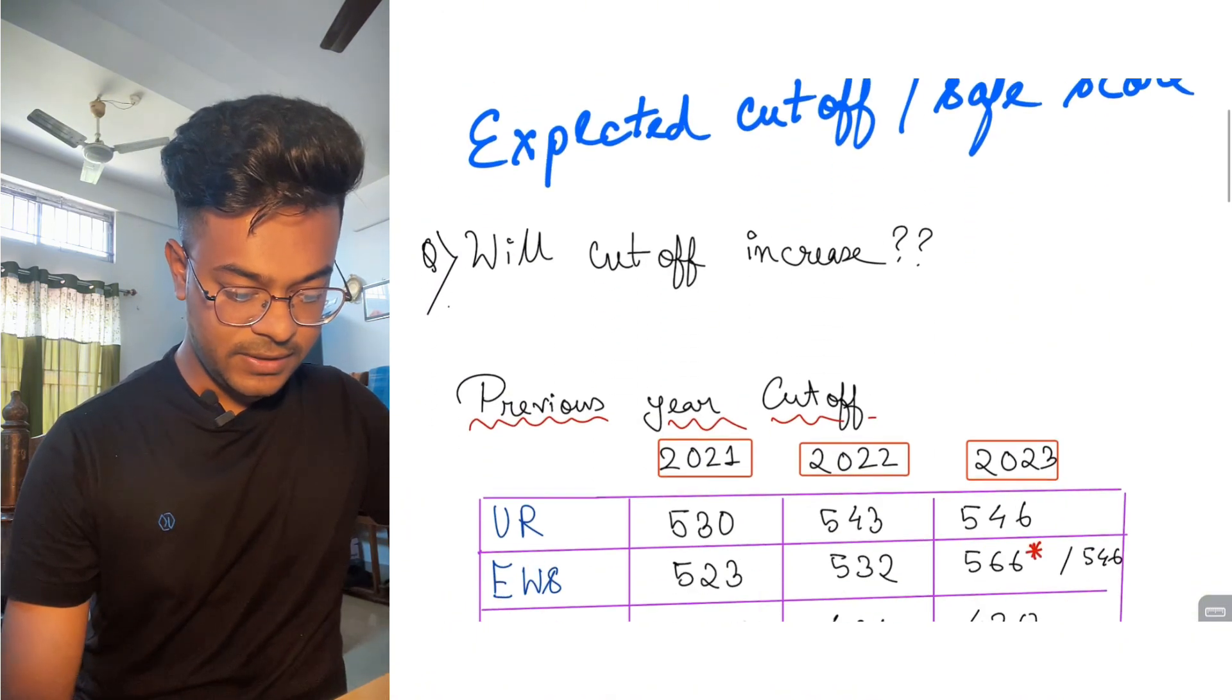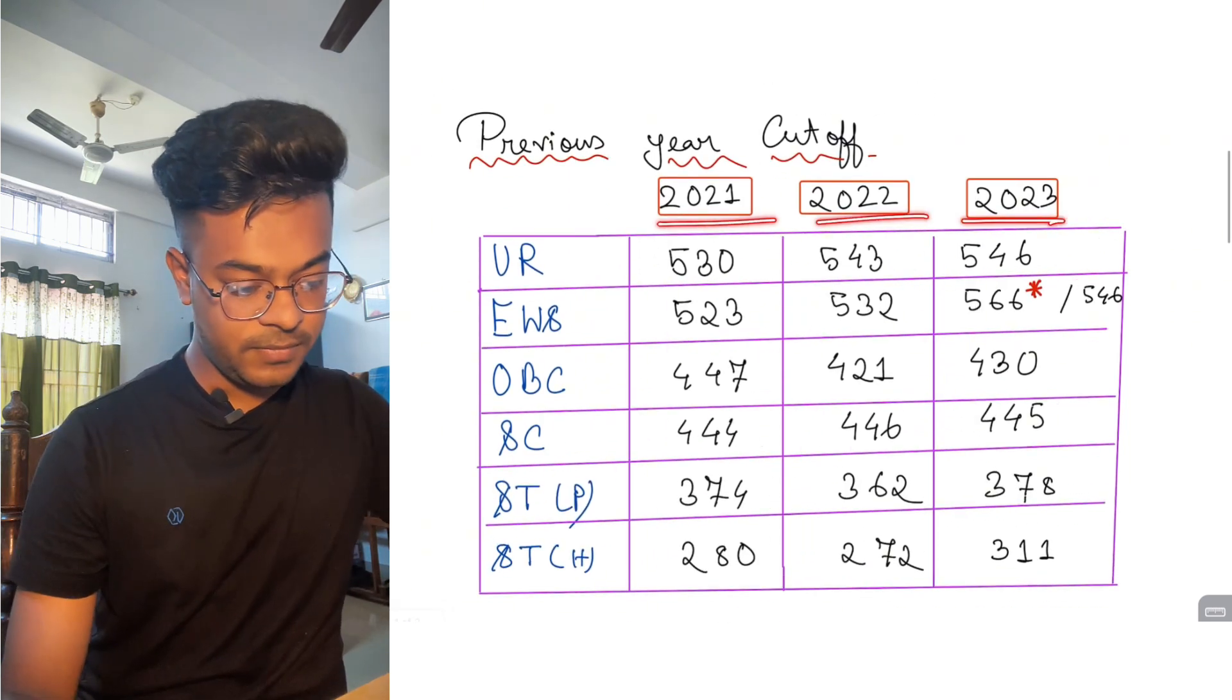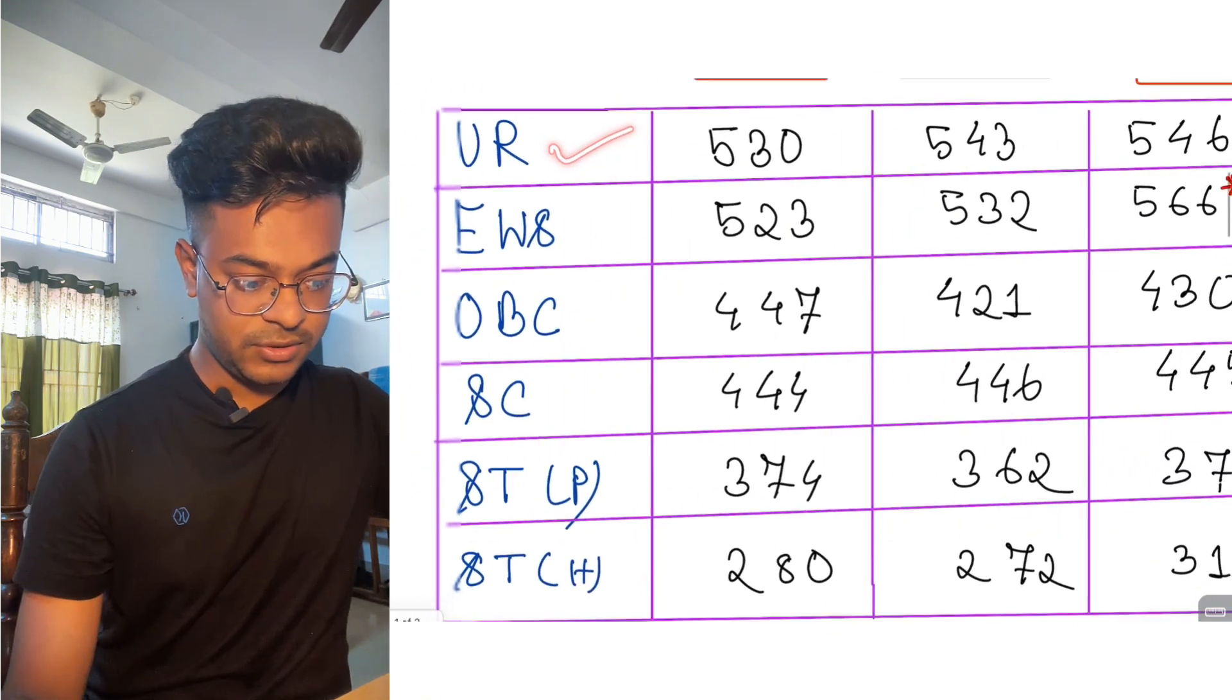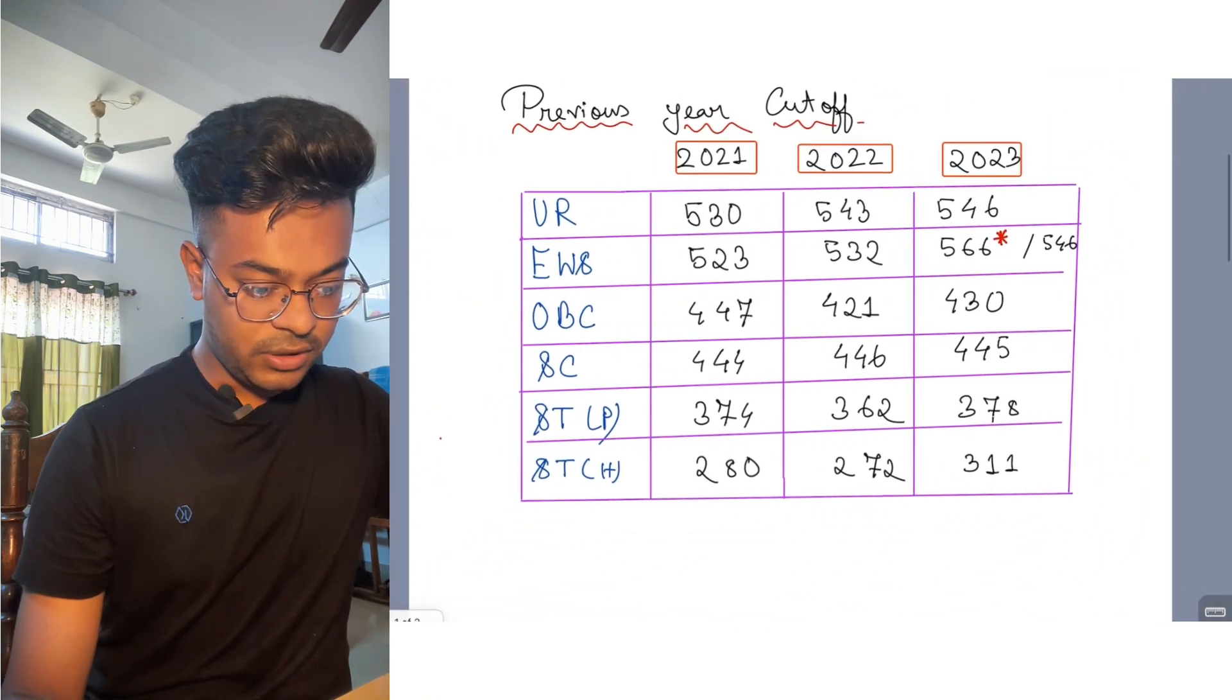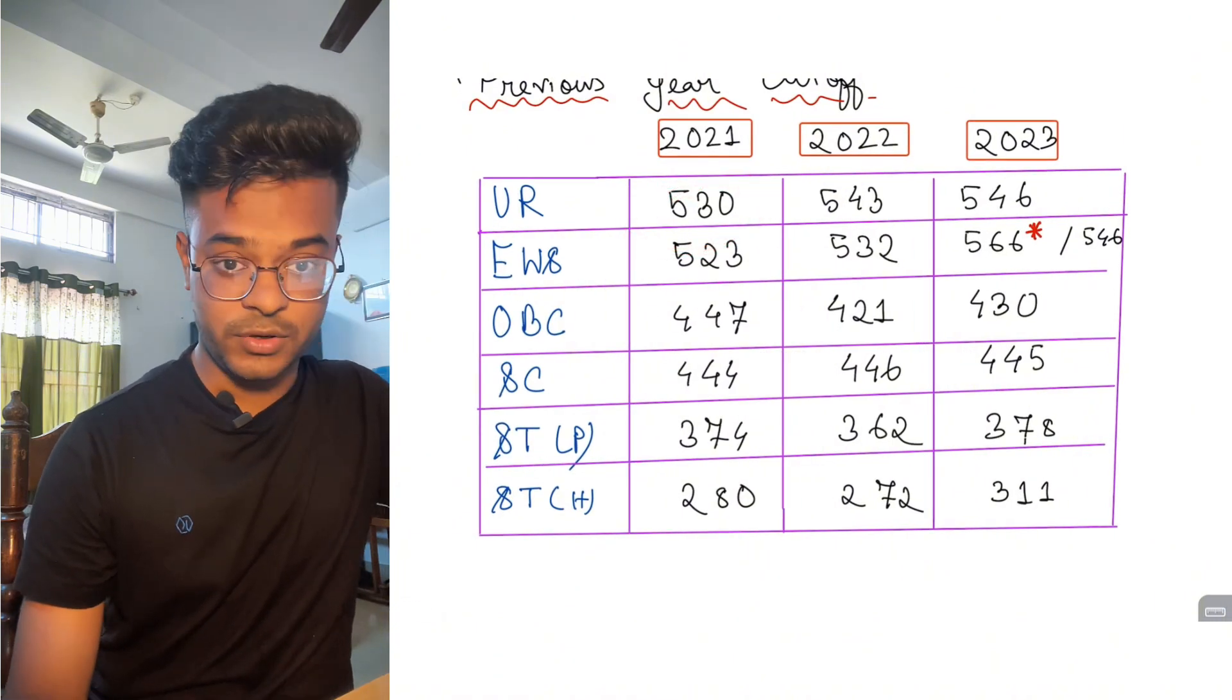So yeah definitely we will be basing cutoff from 2021, 2022, 2023. Cutoff every year for general category varies. Cutoff in case of 2021 was 530.